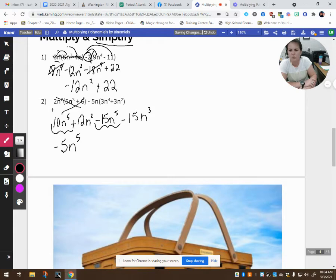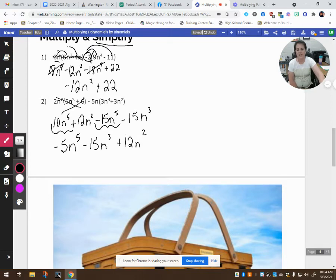What's going to come next? Do we want to put our plus 12n squared or our minus 15n cubed? Correct. Minus 15n cubed because our exponents need to go in descending order. 5, 3, 2. That way it's written in standard form. So negative 5n to the fifth minus 15n to the third plus 12n squared. This is a trinomial of the fifth degree. It has a leading coefficient of negative 5.